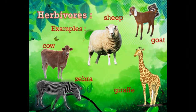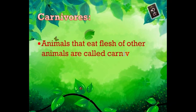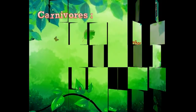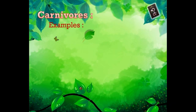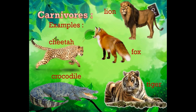The next category is carnivorous animals. Animals that eat the flesh of other animals are called carnivorous animals. Examples of carnivorous animals are cheetah, lion, crocodile, fox, and tiger. All these animals hunt other animals and eat their flesh, so they all come under the category of carnivorous animals.